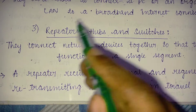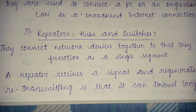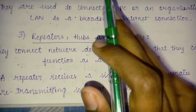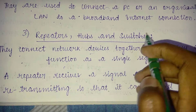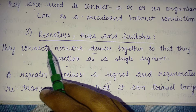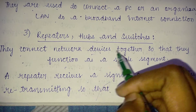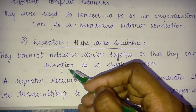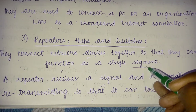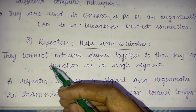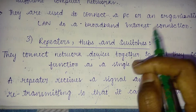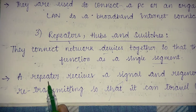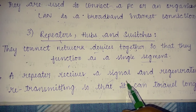Next are repeaters, hubs, and switches. These three connect network devices together so that they can function as a single segment. All three of them work together to perform as a single segment.